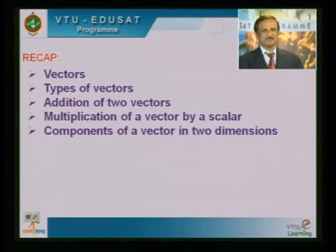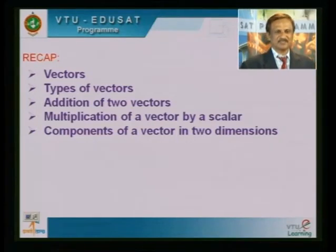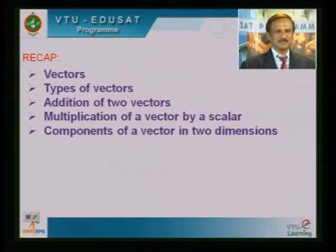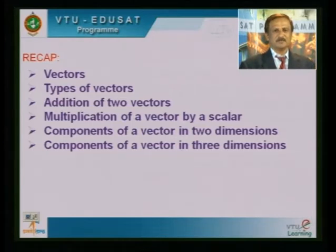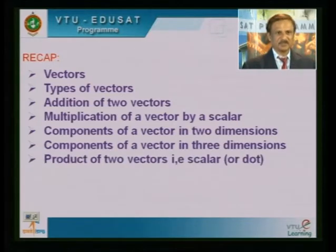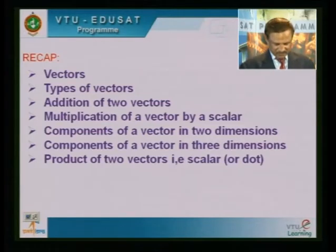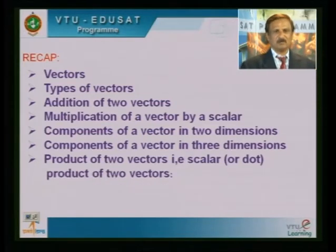A vector can be represented by capital letter A, that can be written as a1·i plus a2·j. Similarly, I think we have studied components of a vector in three dimensions also — a = a1·i + a2·j + a3·k. After that, I think we have discussed about the product of two vectors, that is the scalar product or what we call it as a dot product of two vectors.